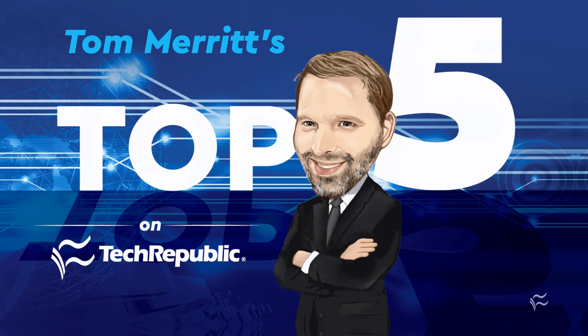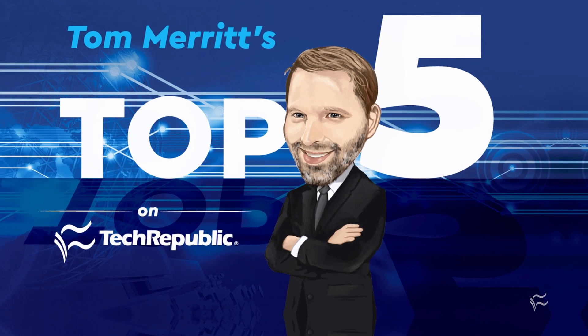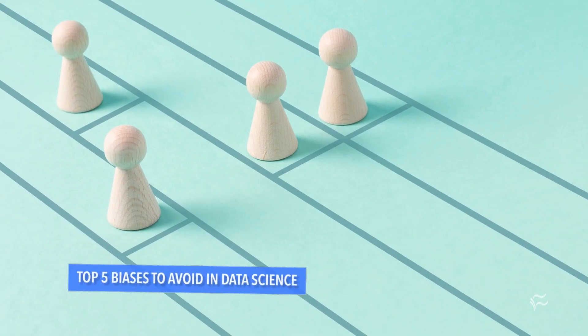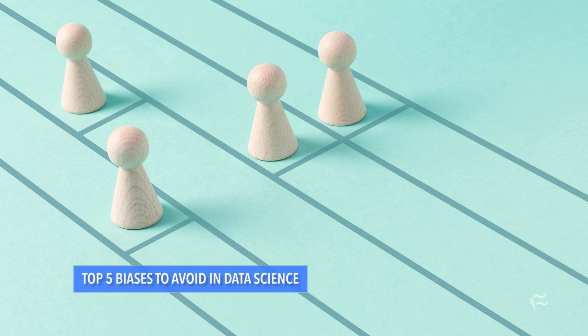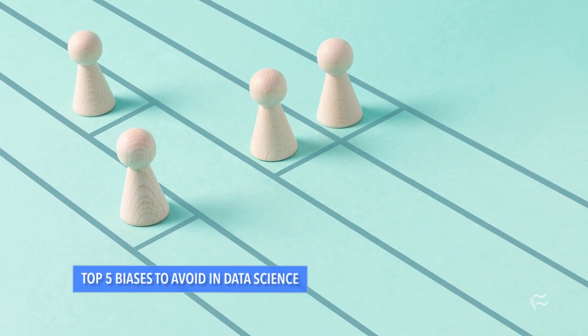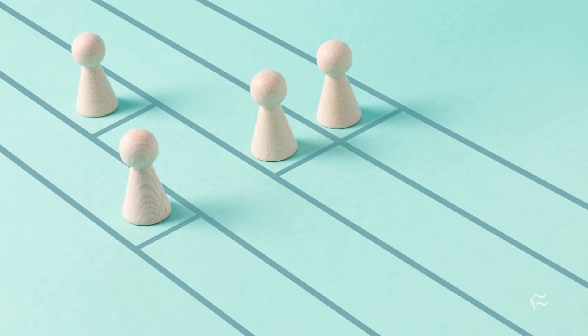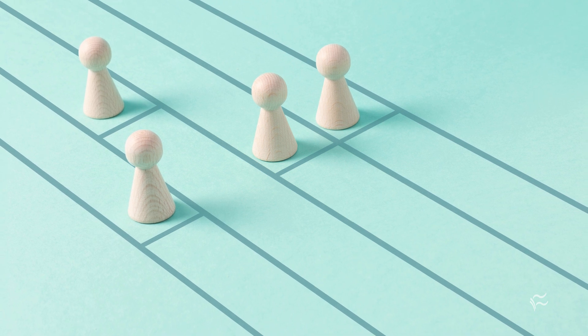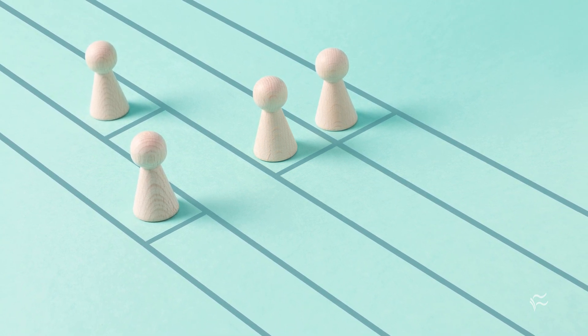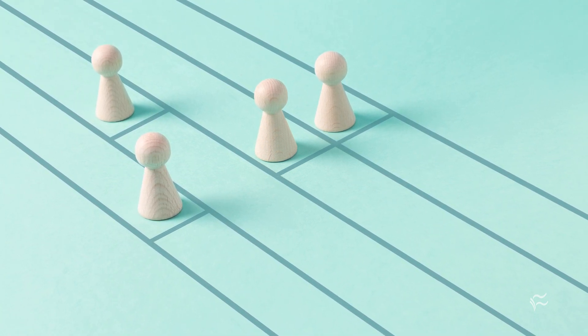I'm Tom Merritt for TechRepublic. Here are five biases to avoid in data science. Bias isn't necessarily bad — it's our mind's way of being able to make a decision quickly. It's an evolutionary advantage. I have an absolute bias against walking out in front of moving cars. That's a good bias.